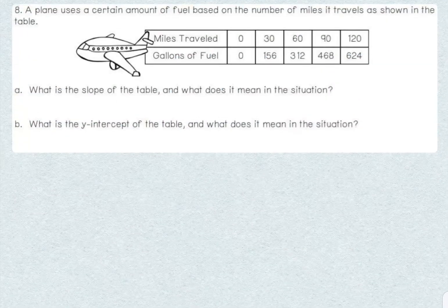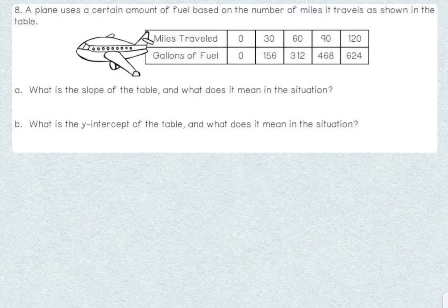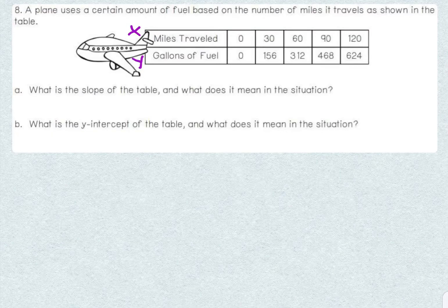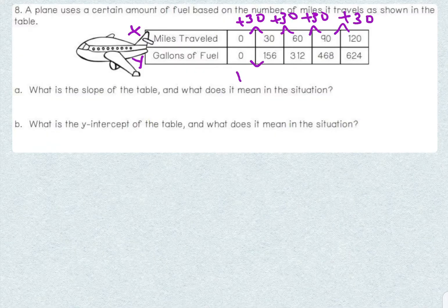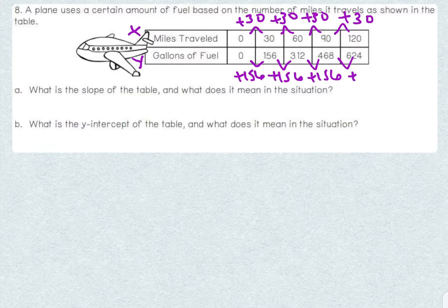Now we're going to move on to an example with a table. A plane uses a certain amount of fuel based on the number of miles it travels, as shown in the table. We have miles traveled and gallons of fuel. The first question is: what is the slope of the table and what does it mean in the situation? Miles are going to be our x and gallons are going to be our y, because we travel the miles first in order to see how many gallons of fuel that takes. To find slope from a table, we look for the change in y over the change in x. Our x increases by 30 each time, and our y increases by 156 each time.